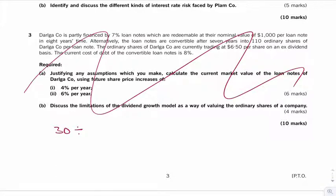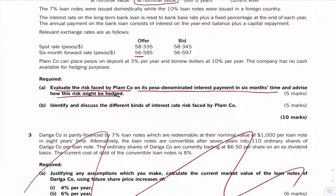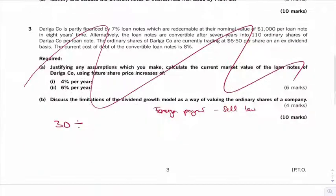And that's a foreign payment. And if you think about it, a foreign payment, what would the bank do? The bank would sell you the foreign money and they sell low, don't they? Anyway, so let's go to the six months rate. Then six month forward rate, there's the low. 56.585.